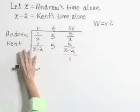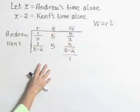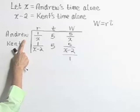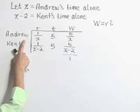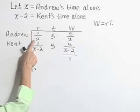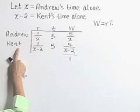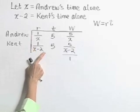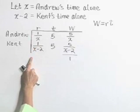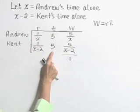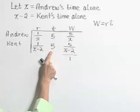Let's use a table to organize our information. If Andrew can perform this job working alone in a time of x hours, then his rate is 1 over x of the job per unit time. Kent's rate correspondingly is 1 over x minus 2 of the job per unit time. We're told that they can complete this job together in five hours.